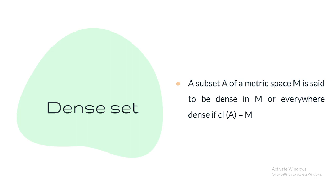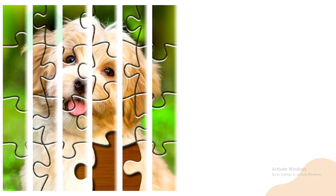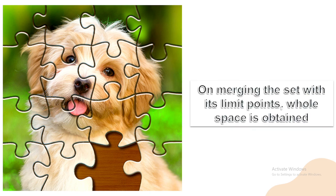Finally, we define the dense set. A subset A of a metric space M is said to be dense in M if its closure equals M — that is, Ā = M. Since Ā = A ∪ A', merging the set with its limit points gives the whole space. So if a set and its limit points together constitute the whole space, that set is dense.